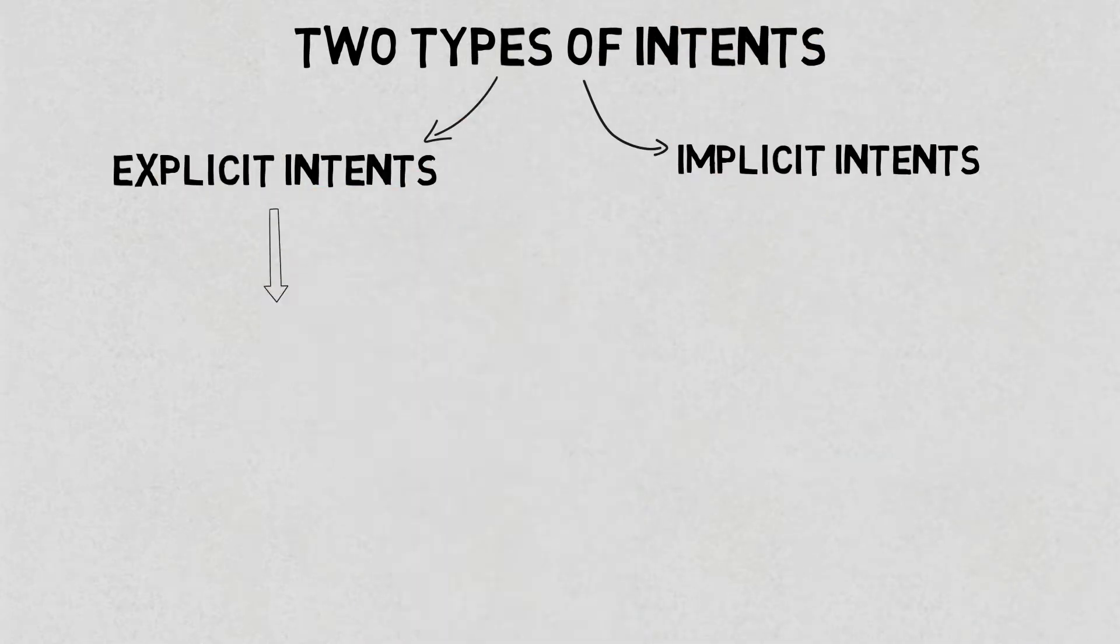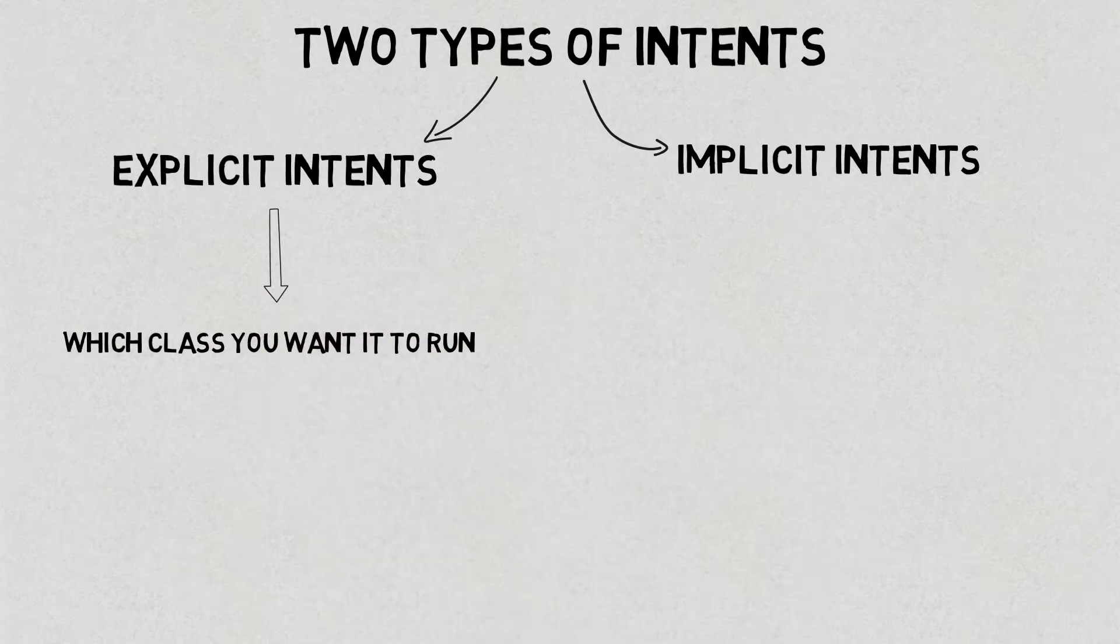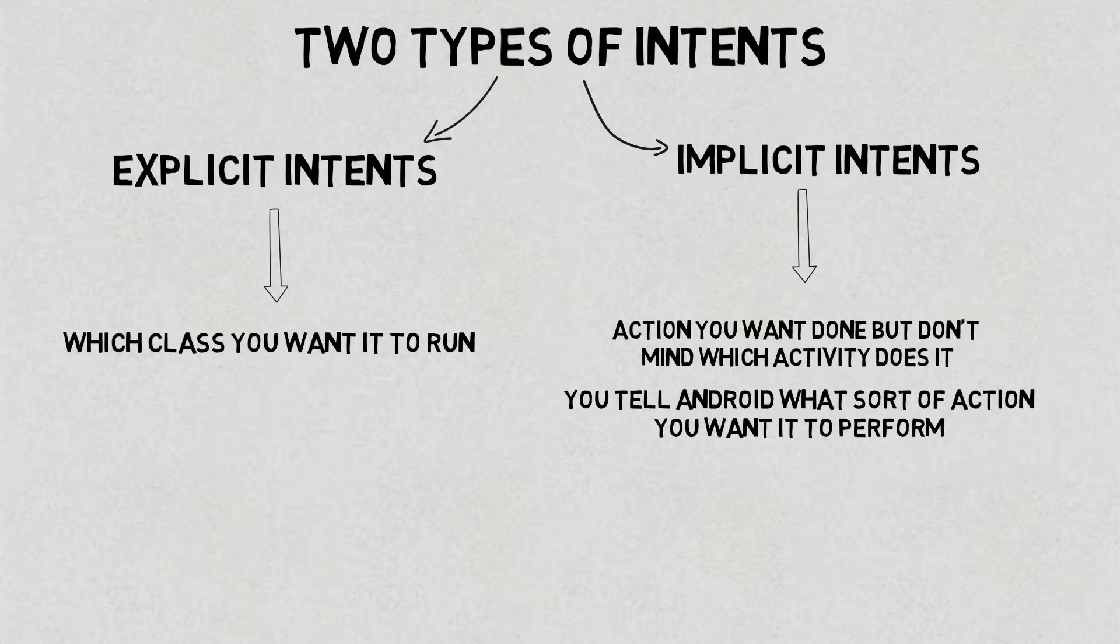In explicit intent, you explicitly tell Android which class you want it to run. If there's an action you want done but you don't mind which activity does it, you create an implicit intent. You tell Android what sort of action you want it to perform and you leave the details of which activity performs it to Android.